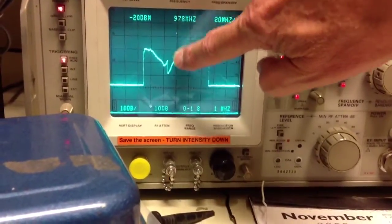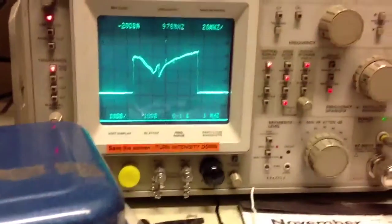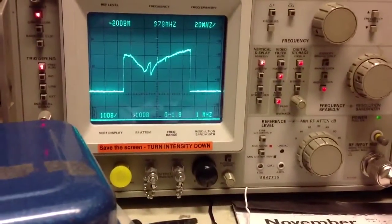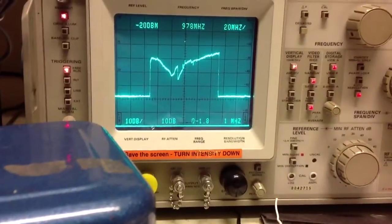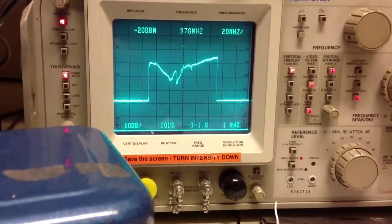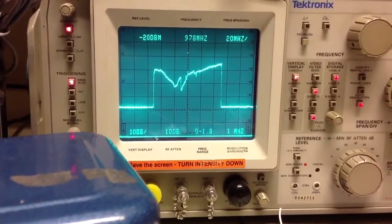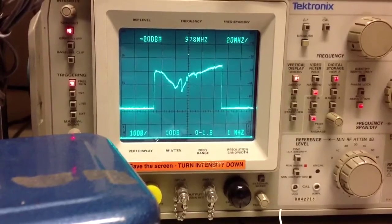Remember this was 0 dB, that's 20 dB of return loss at 978, so that's a pretty good antenna. Incidentally, this change in the shape was due to the fact that I got the iPad too close to the antenna and affected its tuning.